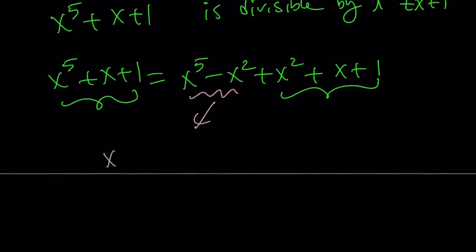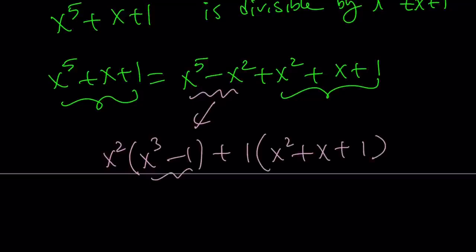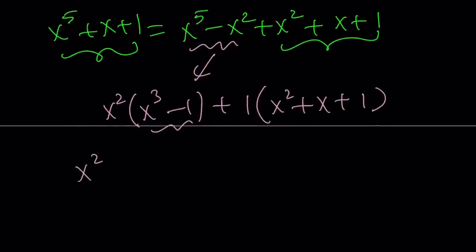But it doesn't matter. You can just factor it. Let's go ahead and factor this. You take out x squared, you get x cubed minus one, and then you can put a one outside just to make it kind of complete. Now, this is the difference of two cubes. This is where the fun starts. You can write it as (x minus one)(x squared plus x plus one), and yay, we got a common factor.